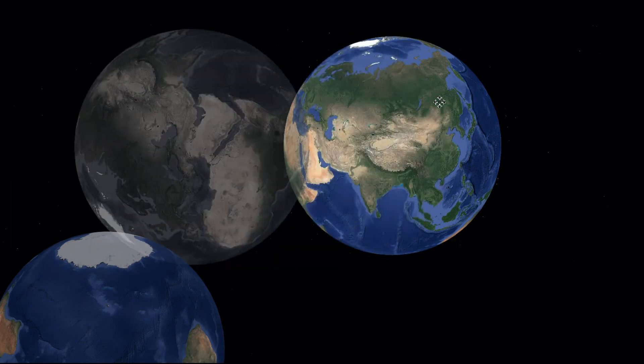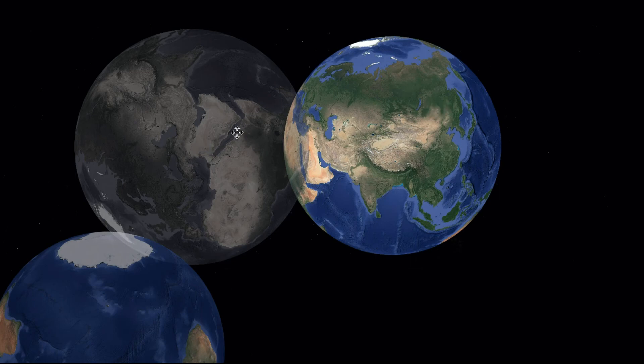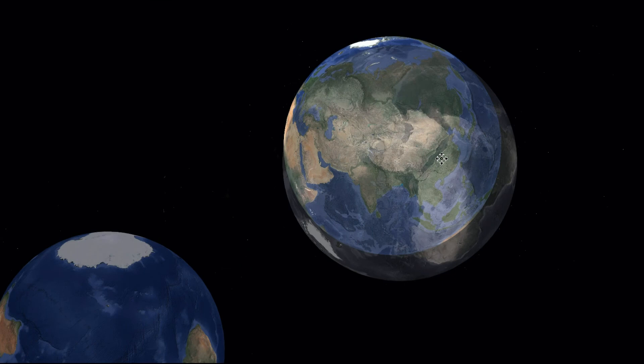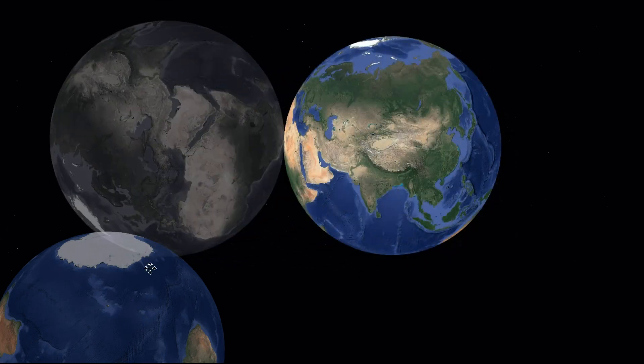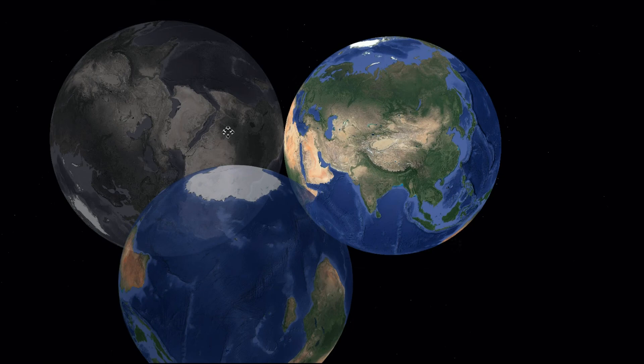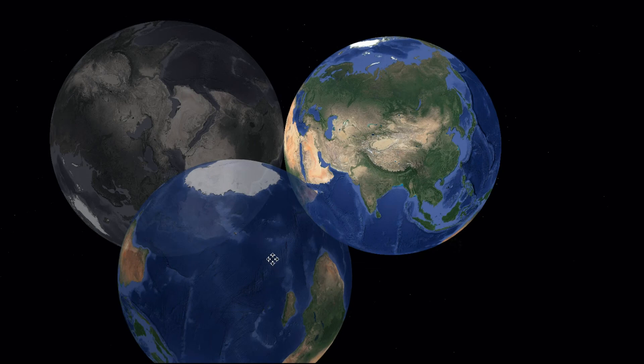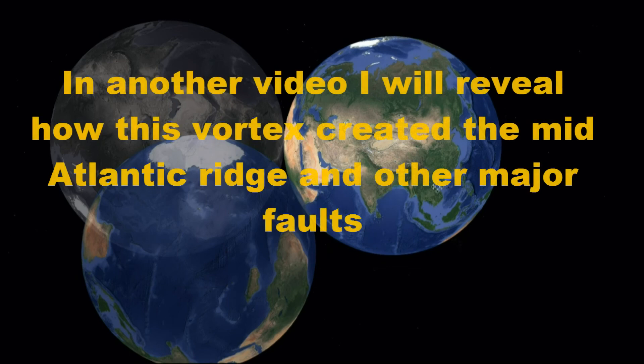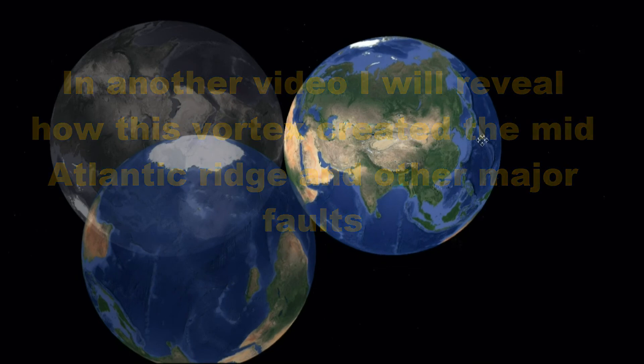You can even kind of see that the features here just look similar all around. You've got this line, this line, you've got two lines here. You can just tell that somehow this is all related to this vortex rotating and spinning. These are gouges. This vortex has, I'm guessing, has gouged a tunnel at the south pole. And then the turbulence around this vortex is what creates the continents and the land features and the surface features all around the planet.